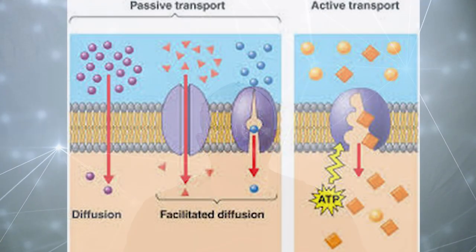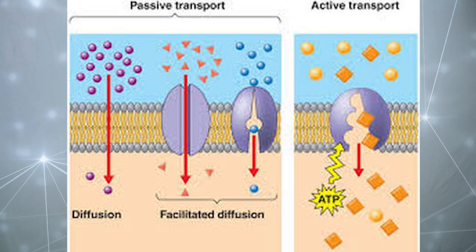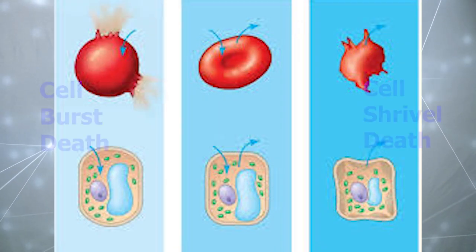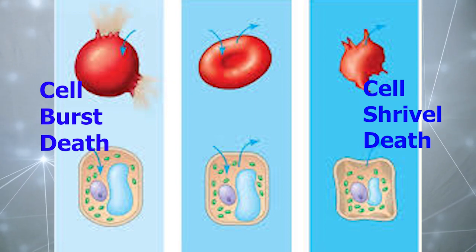In conclusion, all forms of active and passive transport work to help the cell maintain homeostasis by making sure that there is a certain balance of materials in and out of the cell which helps keep the cell alive. If the imbalance is too large, the cell would not be able to maintain homeostasis and may die as a result. We thank you active and passive transport for helping to keep us alive.